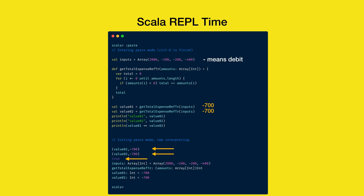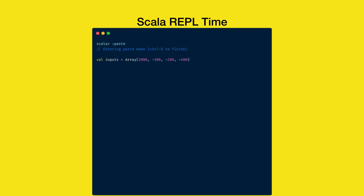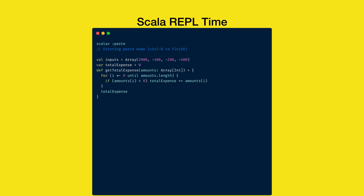What's an example of non-referential transparency? In this example, we have the same array of transaction amounts. Then we have a variable called TotalExpense, which keeps the sum of all debit transactions. We have a function called getTotalExpense that performs a similar calculation to find total expenses.